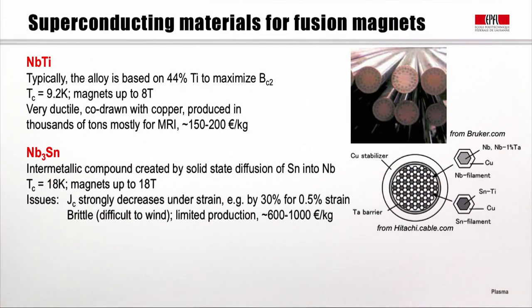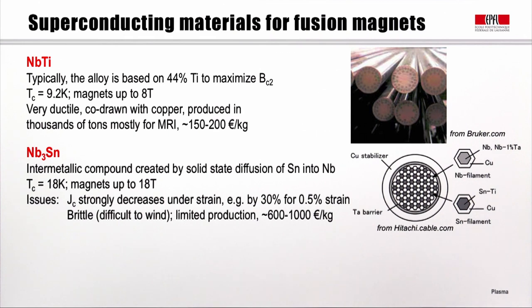The first superconducting material for fusion magnets is niobium titanium, typically an alloy with about 44% titanium to maximize BC2. Its critical temperature is 9.2 Kelvin, and magnets can go up to 8 Tesla. It is a very ductile material, co-drawn with copper, produced in large quantities mostly for MRI medical applications, with a cost of about 150 to 200 euros per kilogram.